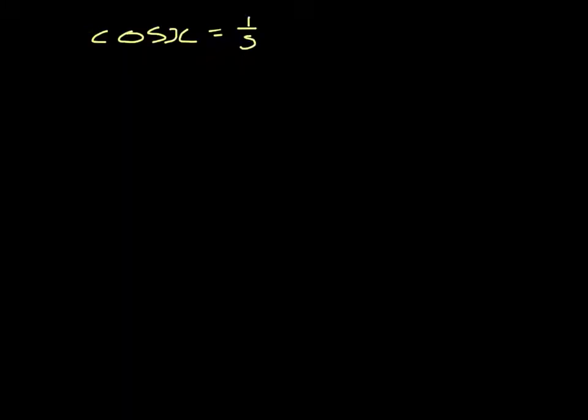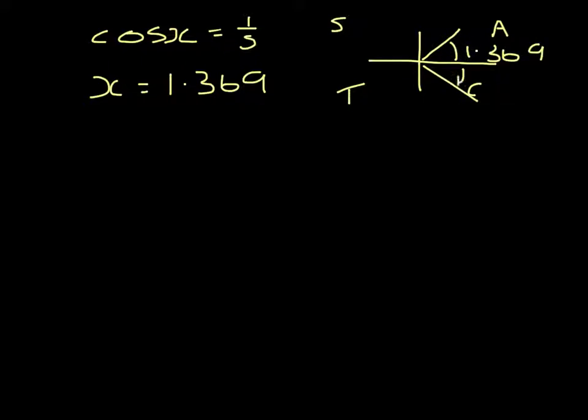I'm changing my calculator into radian mode. The inverse cos of 1 fifth is 1.369. Putting that onto a CAST diagram, I have an answer in here of 1.369. My second answer in the C. So that gives me x equals plus or minus 1.37 to 3 significant figures.